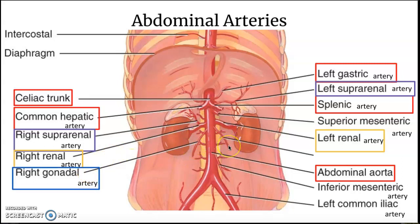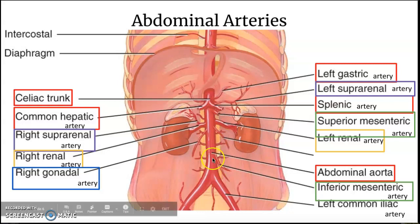Then we have the right gonadal artery, and the left gonadal artery is present as well though not labeled. We also have the superior mesenteric artery coming right off the abdominal aorta — mesenteric means intestines, so this artery goes straight to the intestines. And so does the inferior mesenteric artery. Superior is above, inferior is below.